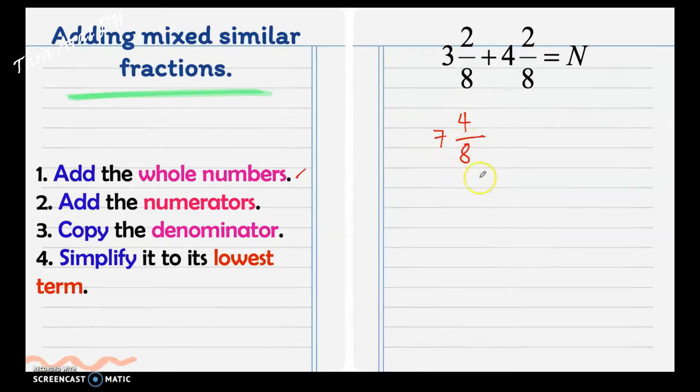As you can see, 4 and 8 still have a common factor. So, you may want to get its lowest term by using continuous division method. Get the factor of 4 and 8. We have 2 as a common factor. So, 4 divided by 2 is 2, 8 divided by 2 is 4. They're still common between 2 and 4, so you continue with the division. 2 divided by 2 is 1, 4 divided by 2 is 2. There is no common between 1 and 2, aside from 1. Then, our answer is 1/2. But, don't forget, there's a whole number here. So, you write 7 and 1/2 is the final answer.